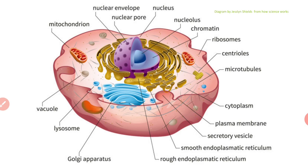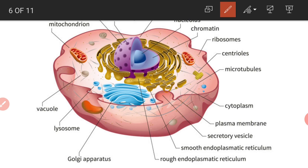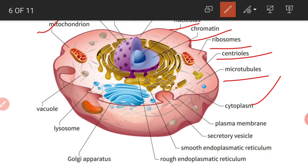In the typical animal cell diagram, you will see the nucleus, which contains chromatin material, ribosomes, centrioles, microtubules, cytoplasm, and mitochondria. Vacuoles are generally absent in animal cells, but it is represented in the diagram because some animal cells, like protozoans, contain vacuoles — since it is the diagram of a typical animal cell, it includes all possibilities.